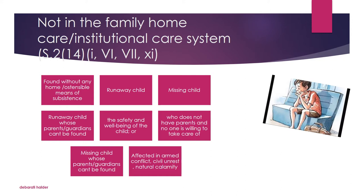The first sub-category includes those children who are found without any home or without any ostensible means of subsistence. This means children who may not have any permanent home, or whose family is not living in proper home conditions. They may be street children, abandoned, or neglected — lacking proper food, shelter, or clothing. They may not have parents or guardians, or may come from socio-economically poor backgrounds. This may also include child beggars living on the streets.